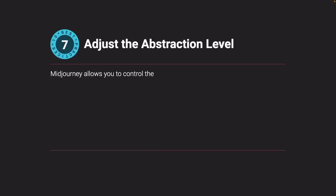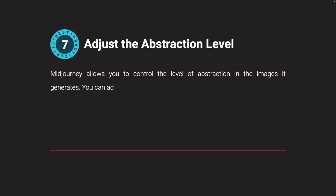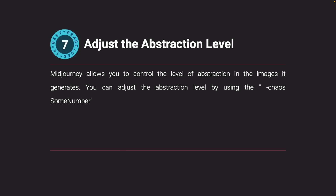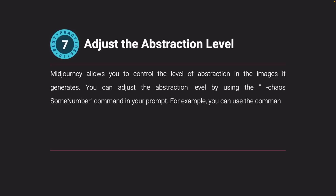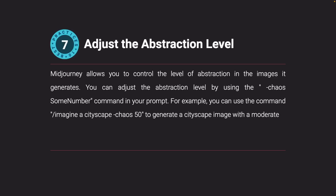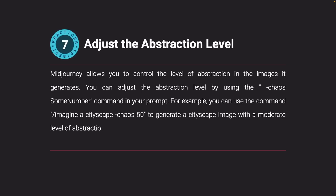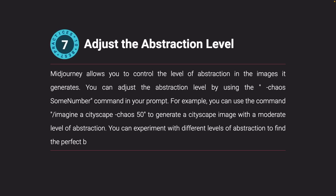Adjust the abstraction level. Midjourney allows you to control the level of abstraction in generated images using the chaos command. For example, you can use '/imagine a cityscape chaos 50' to generate a cityscape with a moderate level of abstraction. Experiment with different levels to find the perfect balance for your image.